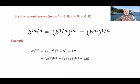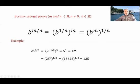Now, positive rational powers: m and n are integers and n is not equal to 0, b is a real number. We define b to the power m/n as b to the power 1/n, raised to the power m — which also equals b to the power m, raised to the power 1/n. For example, 25 to the power 3/2 is the square root of 25, which is 5, then 5 to the power 3 is 125. Equivalently, 25 cubed is 15,625 and its square root is also 125.